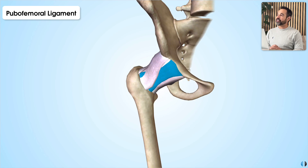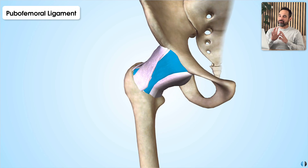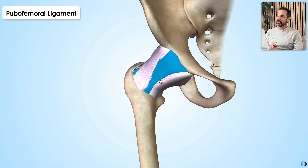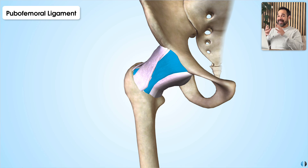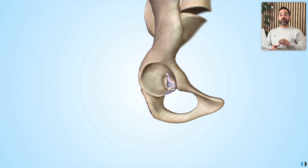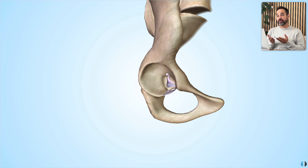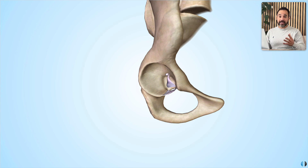Because of its relatively inferior location relative to the iliofemoral ligament, the pubofemoral ligament also reinforces the hip capsule inferiorly, as the inferior aspect is where the hip capsule is suggested to be weakest. Those three ligaments are considered to be the main extracapsular ligaments of the hip joint — ligaments which are outside of the joint capsule — but there are two really important intracapsular ligaments that we need to mention.